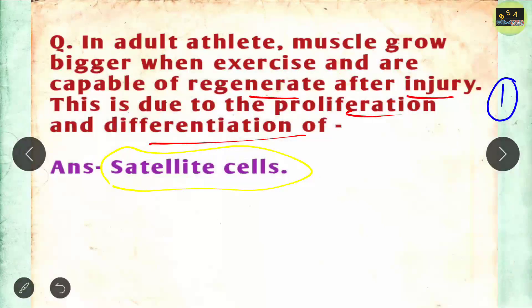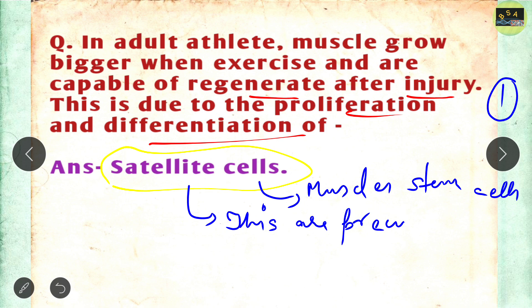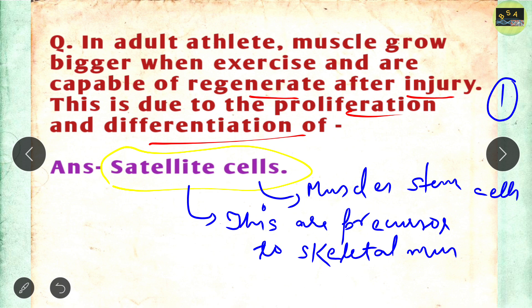Satellite cells are also called muscle stem cells. They are precursors to skeletal muscle cells. So satellite cells are essentially stem cells from which skeletal muscles can be formed. The correct answer for this question is satellite cells.